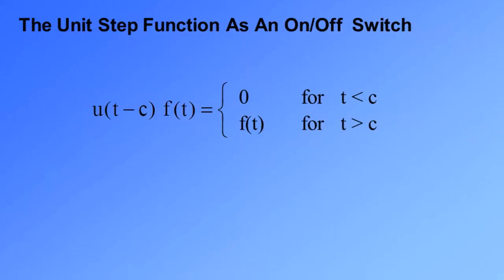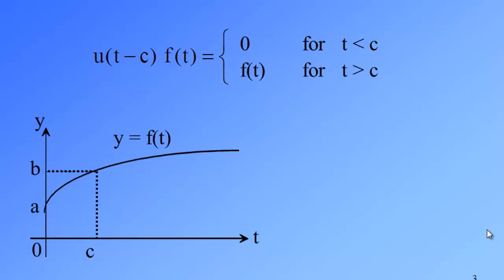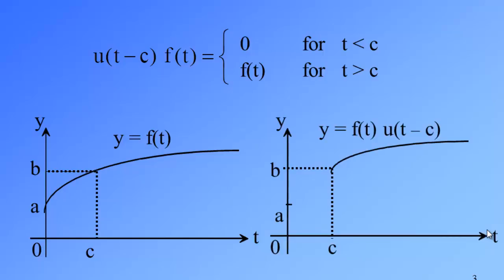Why would you say that the unit step function behaves as an on-off switch? Because the product of a unit step function with a function produces either 0 or f(t). In the case you see the graph that y equals f(t), there is a function before t equals c. After multiplying this with u(t-c), then the portion of the graph before t equals c is cut off. So the only part that remains is f(t) after t greater than or equal to c.